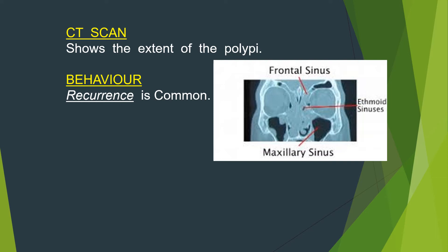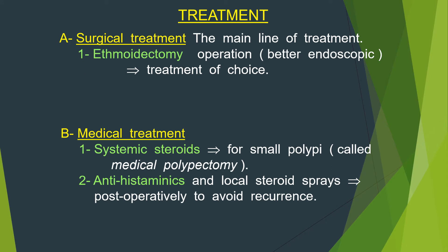CT scan will show the extent of the polypi. Ethmoidal polypi have a behavior of recurrence, which is very common. For treatment, the surgical treatment — the main line — is endoscopic ethmoidectomy. Medical treatment includes systemic steroids for small polyposis called medical polyposis, antihistamines, and local steroid sprays postoperatively to avoid recurrence.